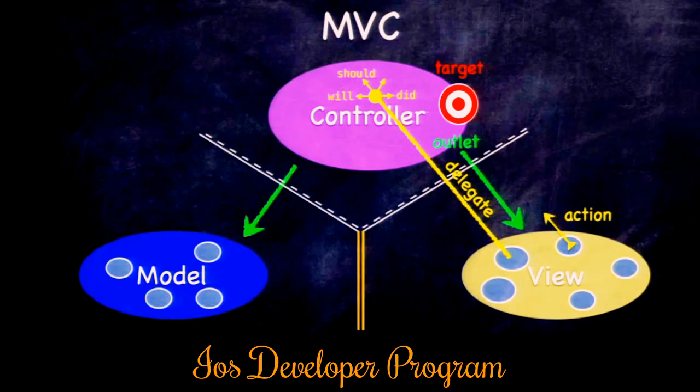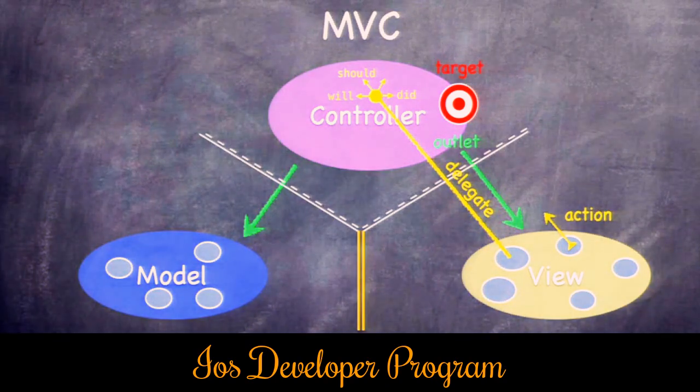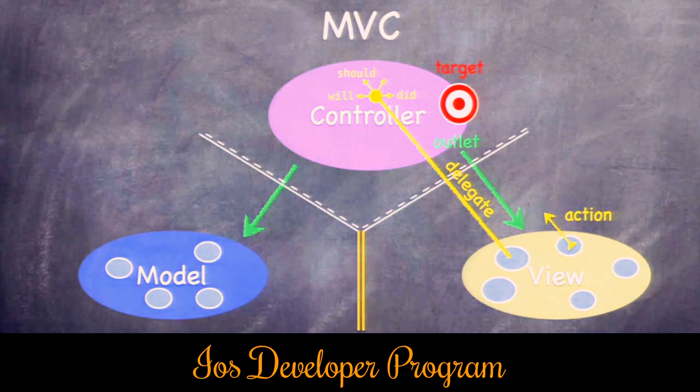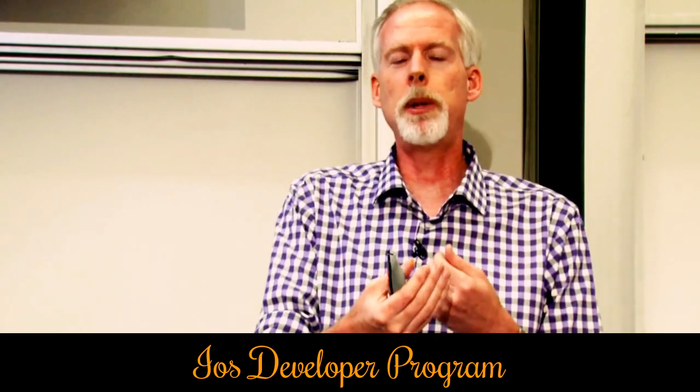CS106A and B don't teach protocols. A protocol is just a blind way to talk to another object. When I teach it, you'll say 'oh yeah, I know what that is, we just didn't call it a protocol.' That's how we do delegation — this blind communication.